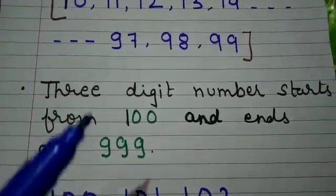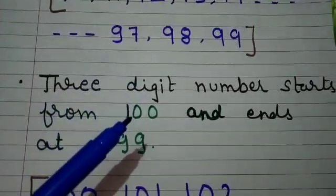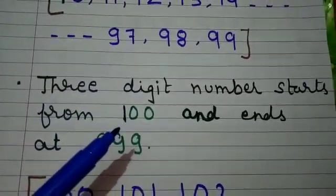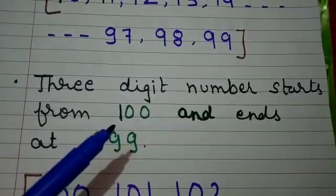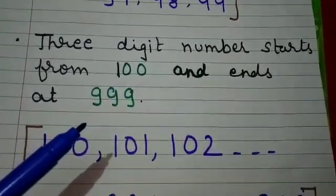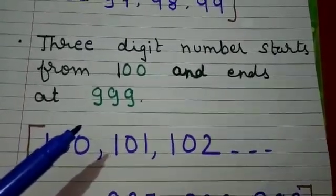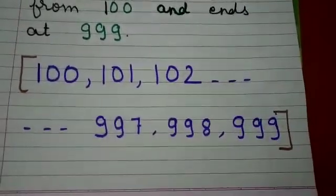Three digit numbers start from 100, that is the smallest three digit number, and end at 999, that is the largest three digit number.